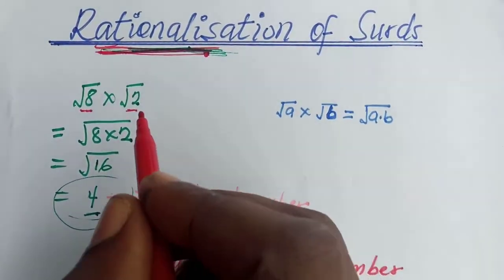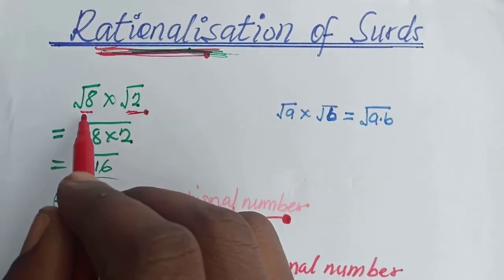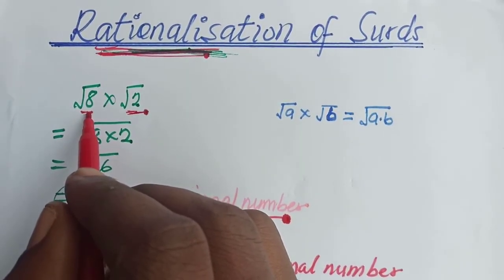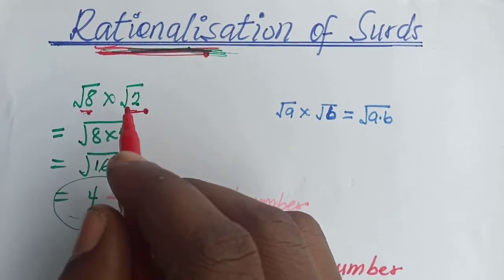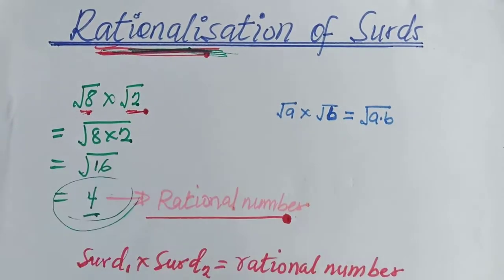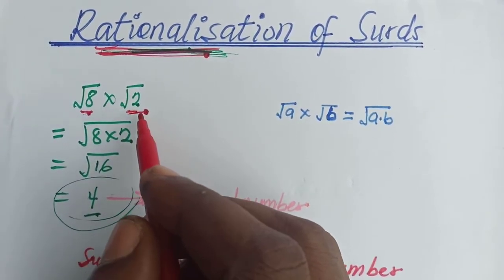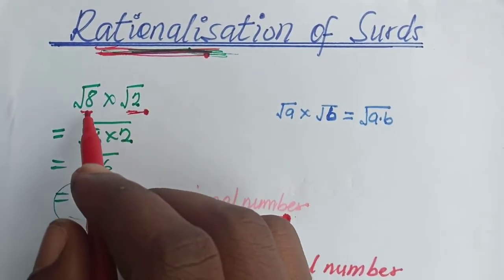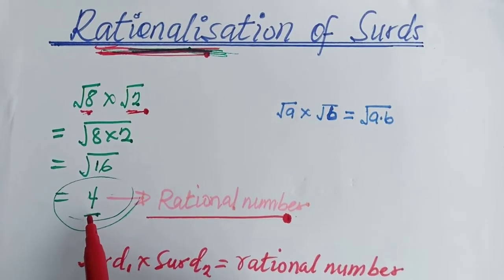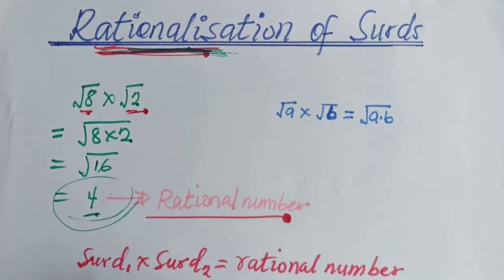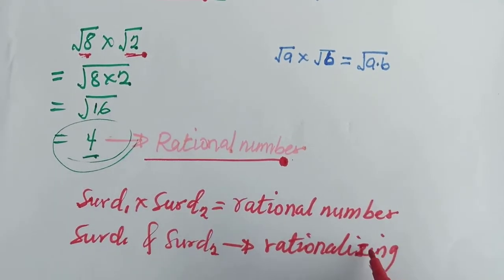So we can say root 2 is the rationalizing factor of root 8 — that is what we multiplied root 8 with to give us the rational number. And at the same time, root 8 is also a rationalizing factor of root 2, because if you had root 2 and multiplied it with root 8, you get the same 4, which is a rational number. So surd 1 and surd 2 are rationalizing factors of each other.